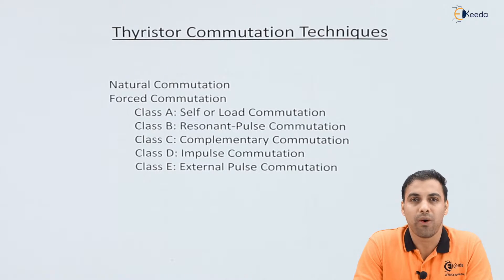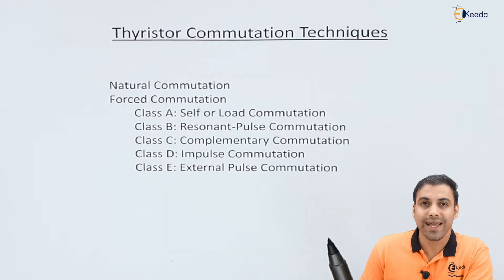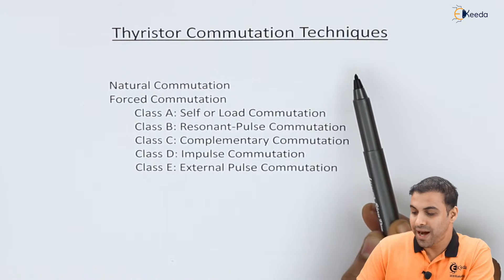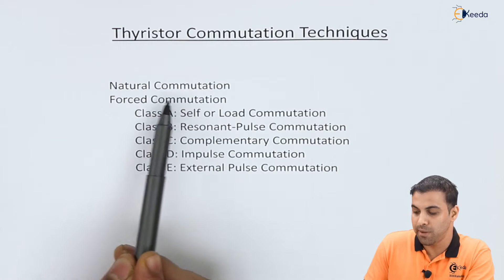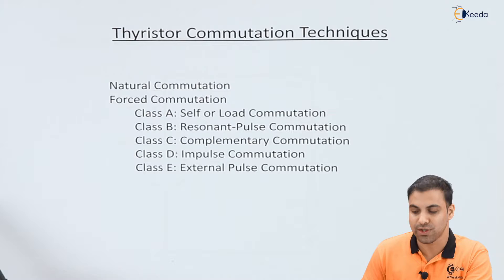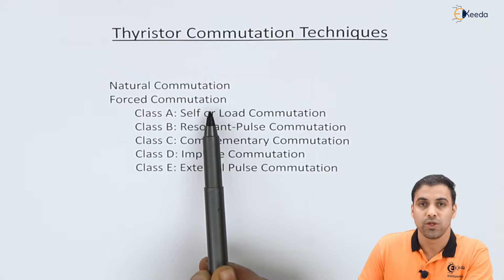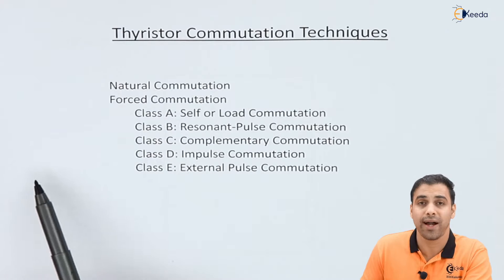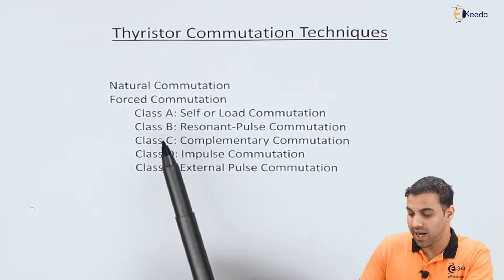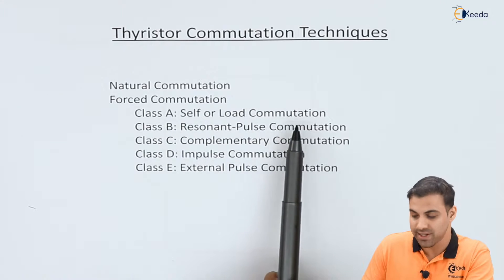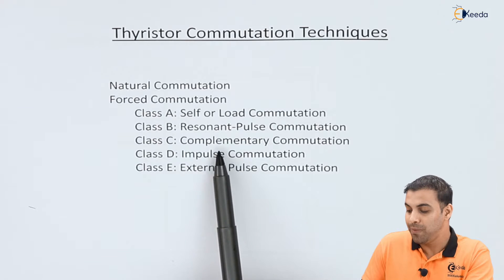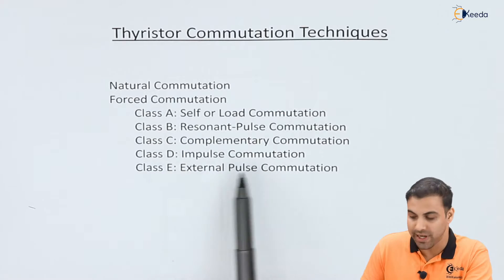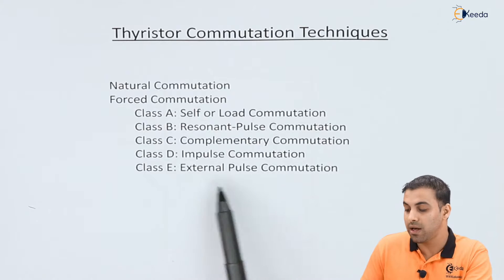Let's talk about different types of commutations. I have classified the thyristor commutation techniques into two parts: one is called natural commutation, and number two is called forced commutation. The forced commutation is further classified into five parts: Class A, which is called self or load commutation; Class B, resonant pulse commutation; Class C, complementary commutation; Class D, impulse commutation; and Class E, external pulse commutation.